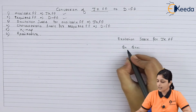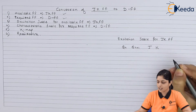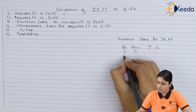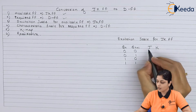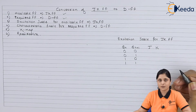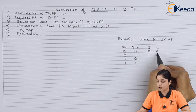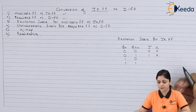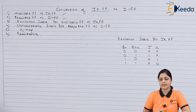The inputs are Qn and Qn+1, and the outputs are J and K. The possible combinations are 0-0, 0-1, 1-0, and 1-1. For 0-0 we have 0, X; for 0-1 we have 1, X; for 1-0 we have X, 1; and for 1-1 we have X, 0. This is the excitation table for the JK flip-flop.